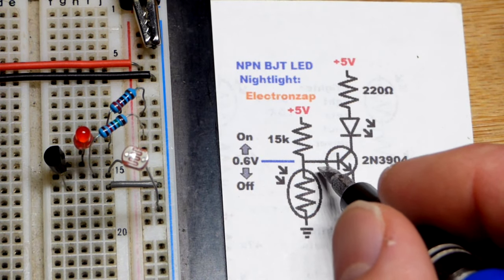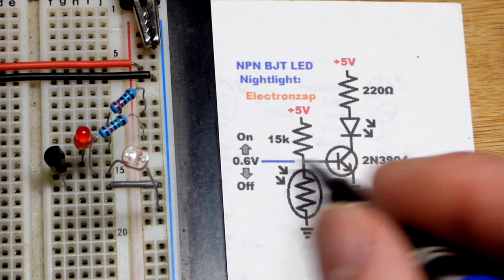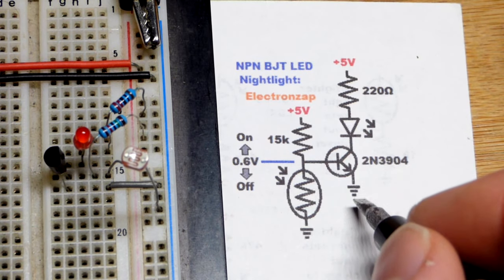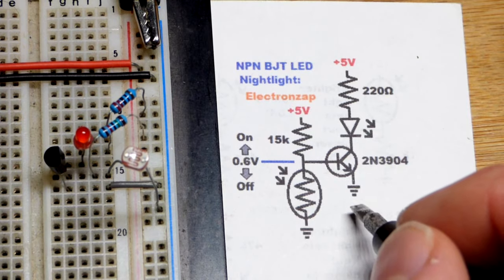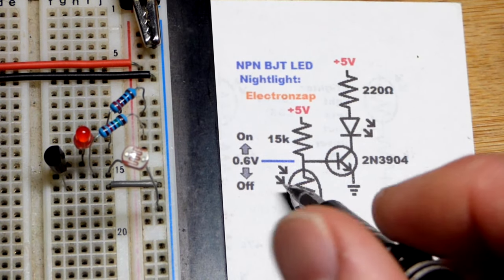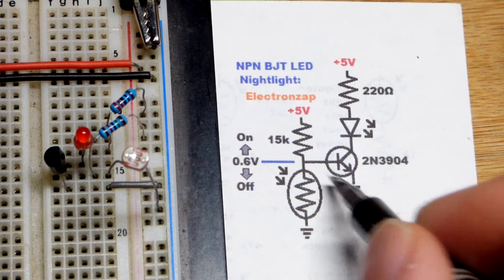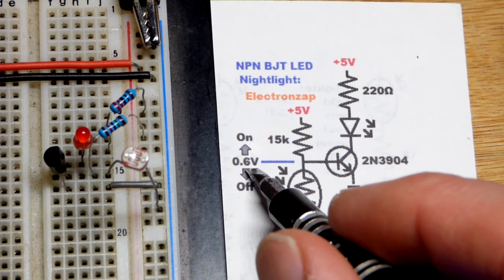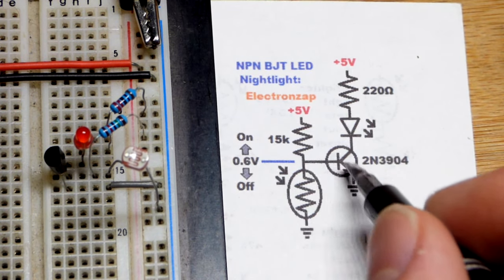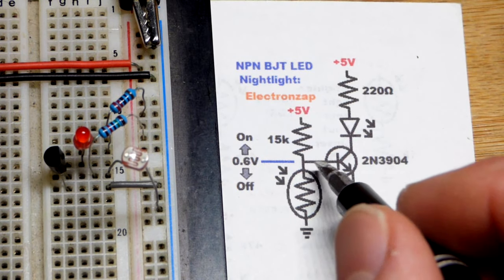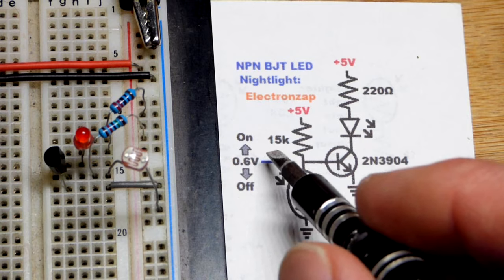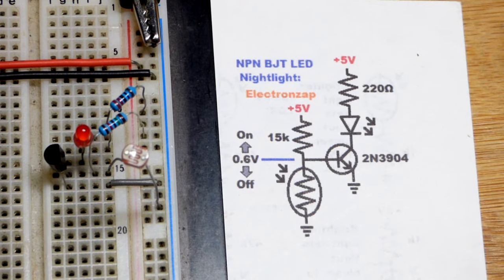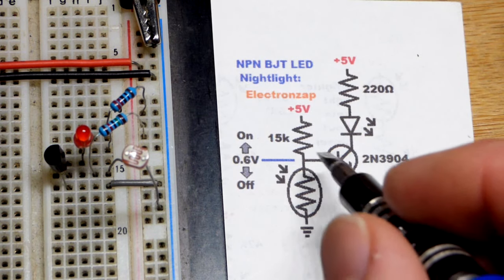When the voltage gets to about 0.6 volts approximately or higher, current's going to start flowing from base to emitter, and it's going to allow many times the current to flow from collector to emitter. Usually with voltage dividers you don't want current being pulled out, but in this case it doesn't matter as long as we get to about 0.6 volts.